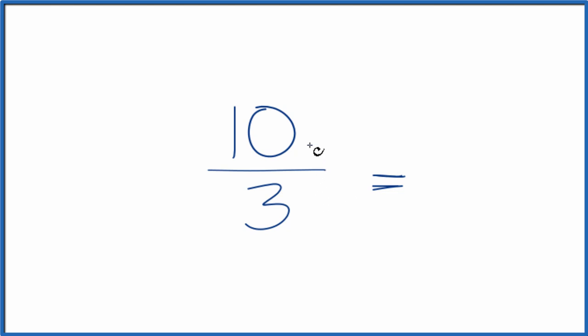But the only factor that goes into 10 and 3, that's 1. You divide 10 by 1, you get 10. Divide 3 by 1, you get 3. That's 10 thirds and that's what we started with.